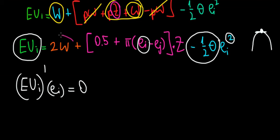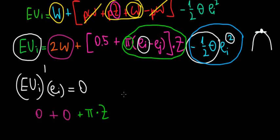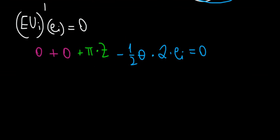Differentiating with respect to e_i: 2W is a constant so its derivative is 0. The 0.5 times Z term is also constant, giving 0. The pi times e_i term differentiates to pi times Z. The e_j term has no dependence on e_i so its derivative is 0. Finally, differentiating minus 1/2 theta e_i squared gives minus theta times e_i. Setting the whole expression equal to zero: pi times Z minus theta times e_i equals 0.